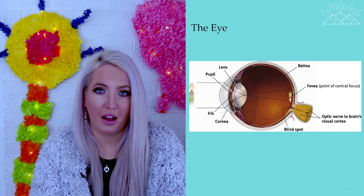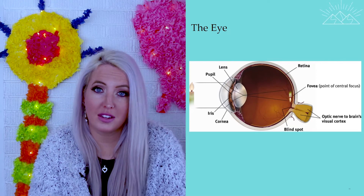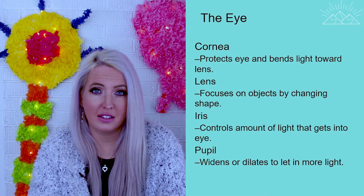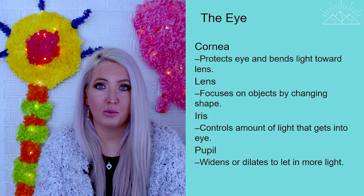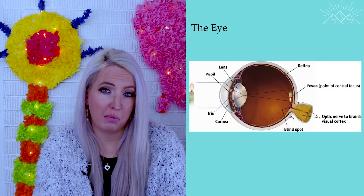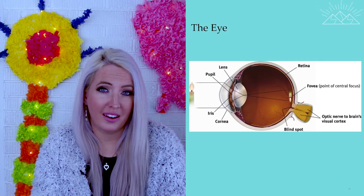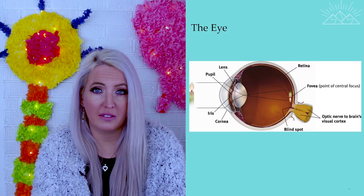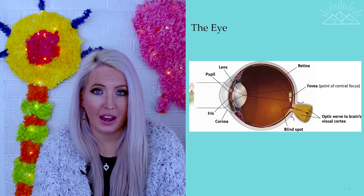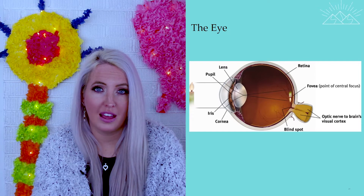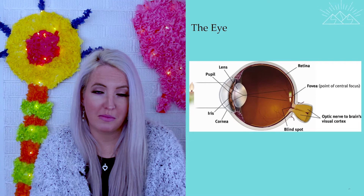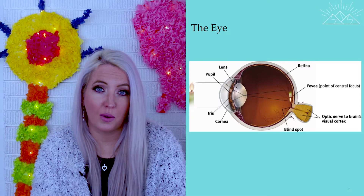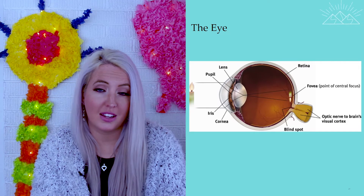We'll start here with the diagram of the eye. There are a lot of different parts of the eye, from the cornea, the iris, the pupil, and the lens that make up the front of our eye, to the retina, the fovea, the optic nerve, and the blind spot in the back of our eye. The retina is where all the visual information lands on our eye, the fovea being that point of central focus. Whatever you're looking at right now is in your fovea — it's more clear than all the information in the surrounding peripheral area, because that information is sitting right now on your fovea and the rest is on the rest of your retina.